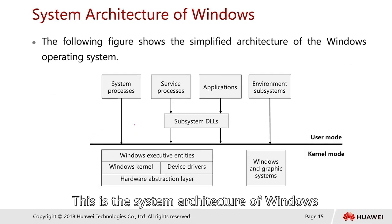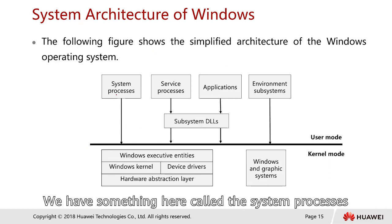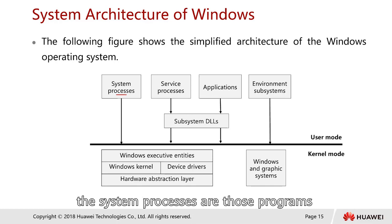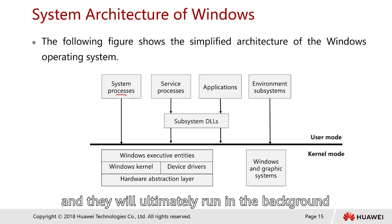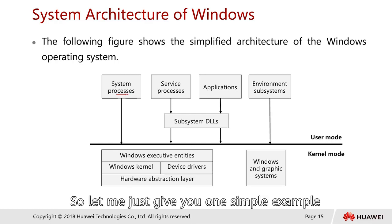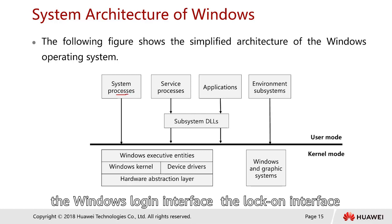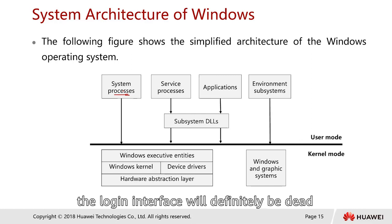This is the system architecture of Windows. The following figure shows the simplified architecture of the Windows operating system. We have something called system processors — these are programs that don't require any human interaction and will automatically run in the background, especially during the boot-up process. For example, the Windows login interface will definitely appear even without human interaction, as will the entire graphical user interface.